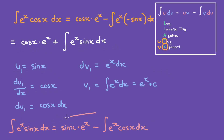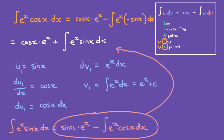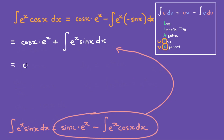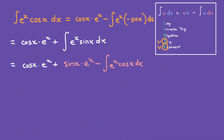Let's put this part into the equation and see how we can solve this integral. That's equal to cosine of x times e to the power of x plus sine of x times e to the power of x minus the integral of e to the power of x cosine of x dx. I'm going to show you a trick right here. The trick is to write all of the stuff that we have into one line as an equation, and you will see why this is useful.